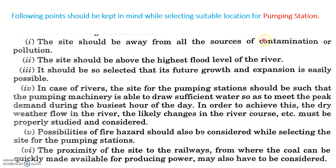There are certain points to keep in mind when selecting or locating a pumping station. First, it should be far away from any contamination or pollution zone. Second, it should be above the high flood level, because if placed at a lower level, the pump will be submerged during flooding and cause damage. Third, the location should allow provision for future growth and expansion. Fourth, if placing the pump near a river, it should allow withdrawal of sufficient water during peak demand and even in the dry season.